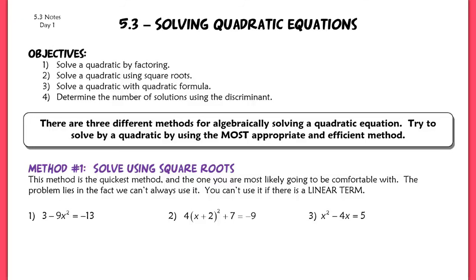This is the first lesson in Chapter 5, but we're actually working out of Section 5.3. We're going to be solving quadratic equations. We're going to show you three different ways to solve a quadratic. The first way is using square roots, the second method is by factoring, which we've already done a little bit, and the third way, which is probably a review for most of you, is the quadratic formula. Then the last thing we're going to do is look at the discriminant, which is part of the quadratic formula, and determine the number of solutions that a given quadratic equation has.